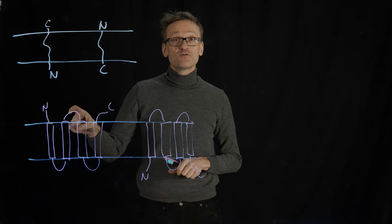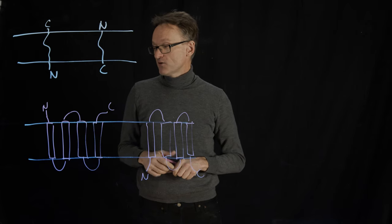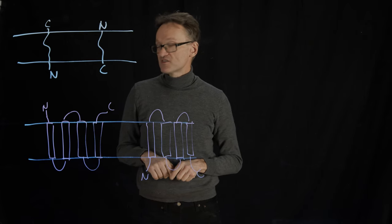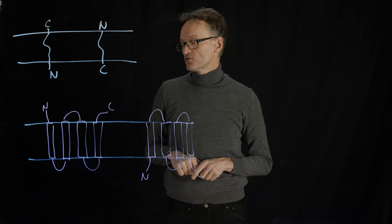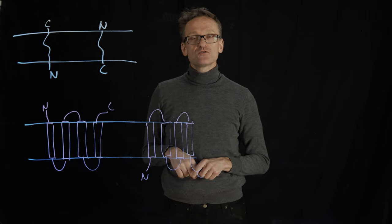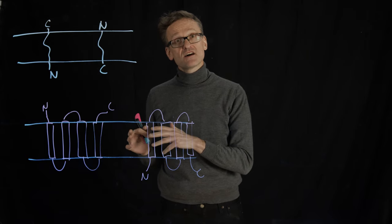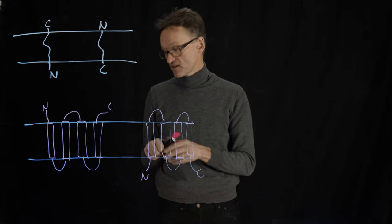In these loops, you frequently have charges. And what Gunnar noticed is that there appears to be an offset so that you don't have random charges, but you tend to have positive charges on one side and negative charges on the other side in loops.